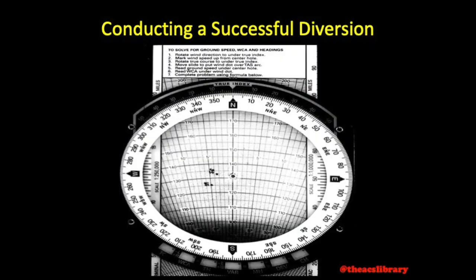Using your E6B, based on your predetermined true airspeed, the winds at your altitude, and your desired heading, follow the instructions on the E6B to determine your aircraft's expected ground speed and any wind correction to be applied while en route to the diversion airport. One trick to help facilitate this would be to mark the wind direction and speed for certain positions and altitudes along your route on your E6B prior to takeoff. In this case, I have marked winds of 280 at 8 knots at 6,000 feet and winds of 240 at 12 knots at 9,000 feet along my route.